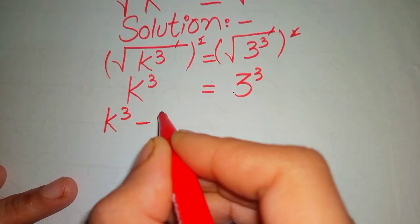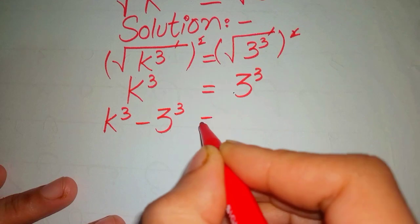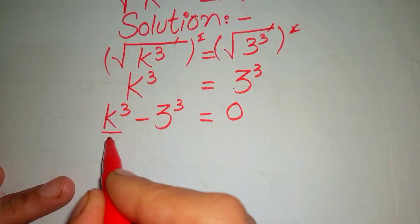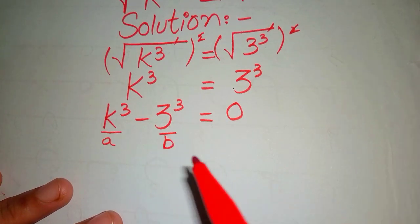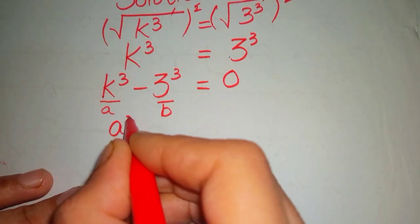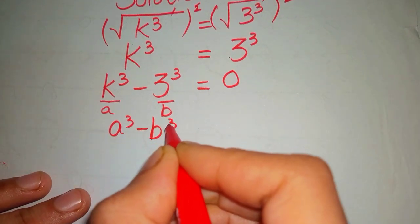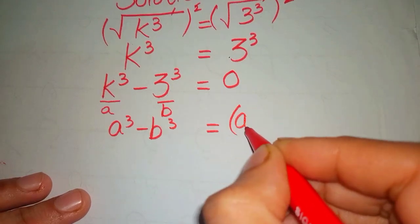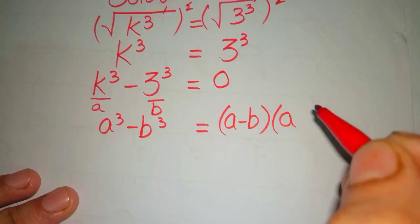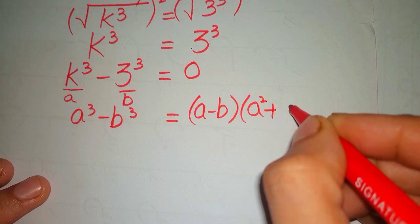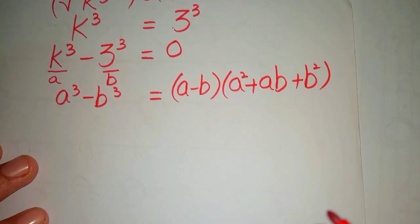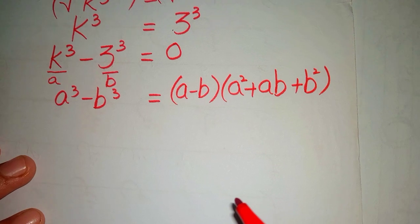When we rearrange this equation it becomes k cubed minus 3 cubed equals 0. We can say that this is our a and this is our b, so we apply the cubic formula: a cubed minus b cubed equals a minus b, into a squared plus ab plus b squared.